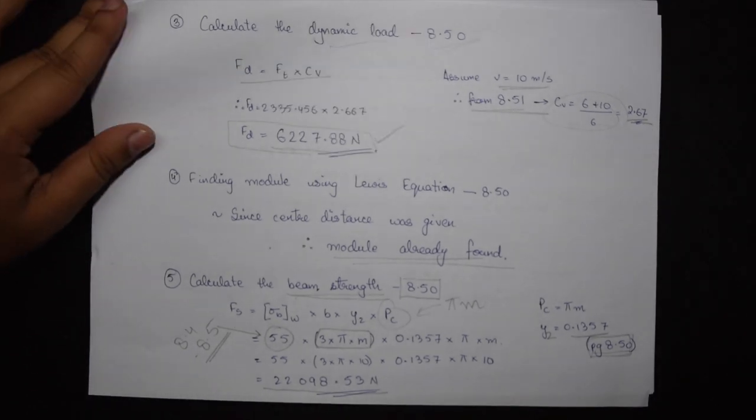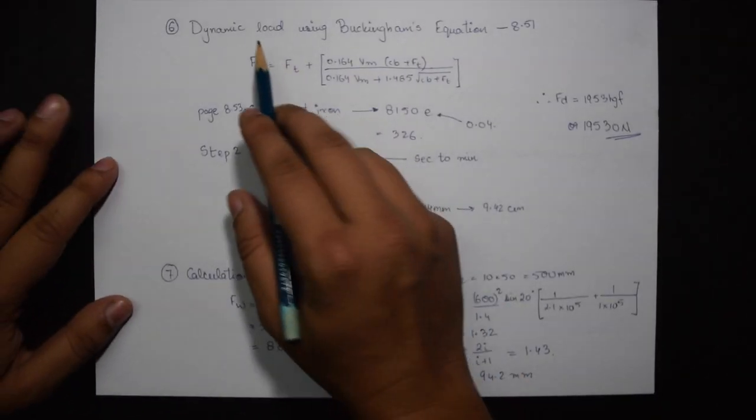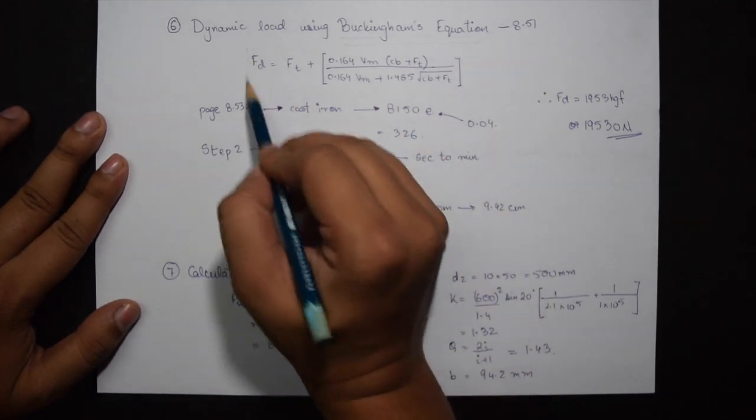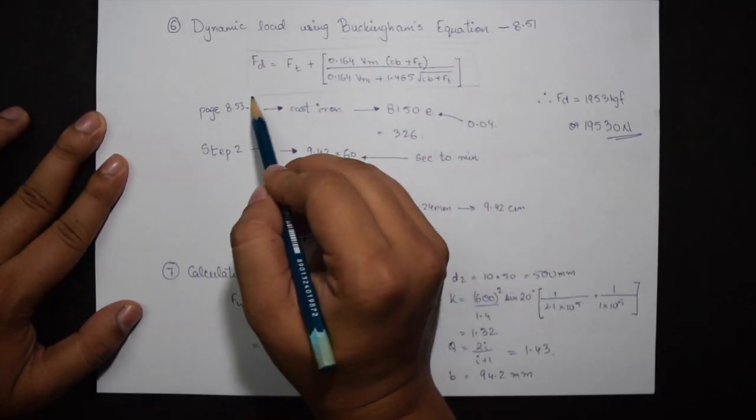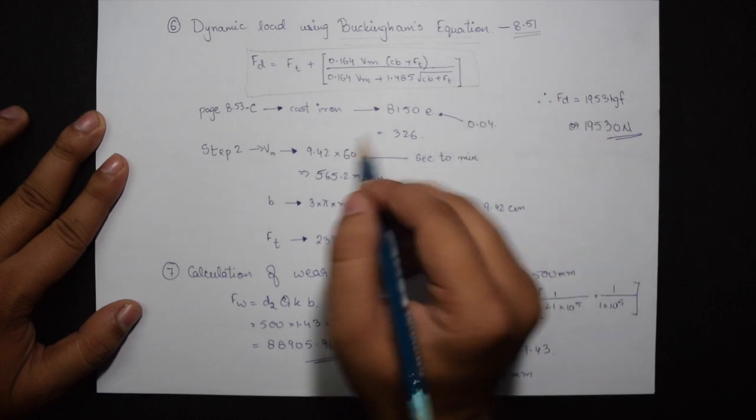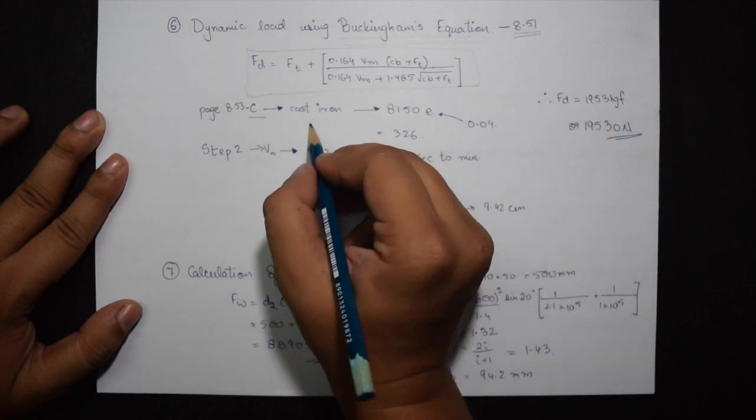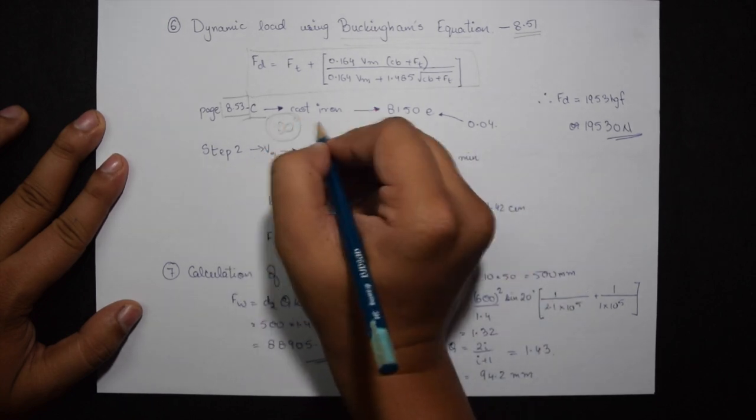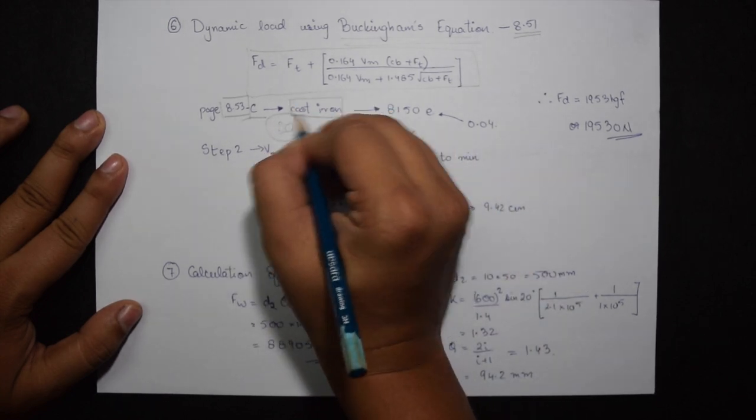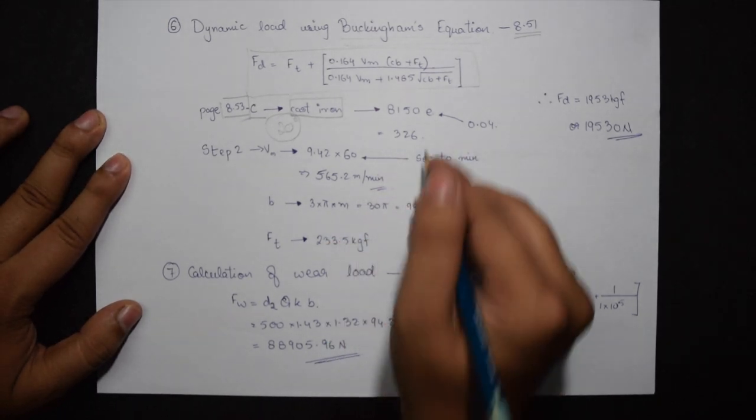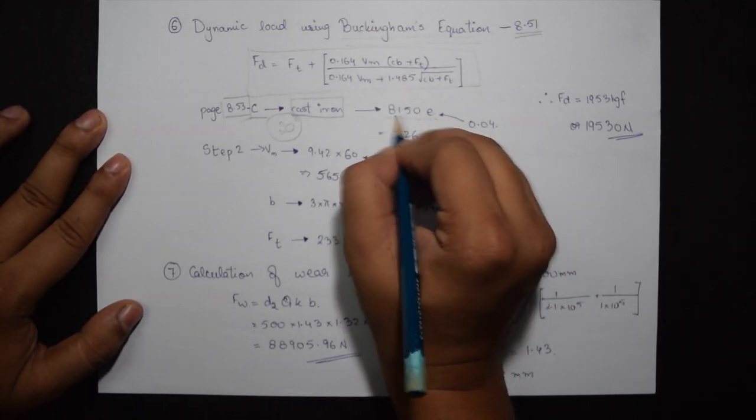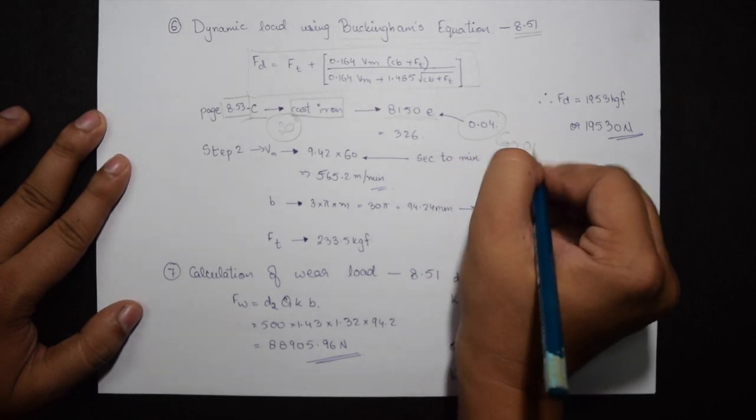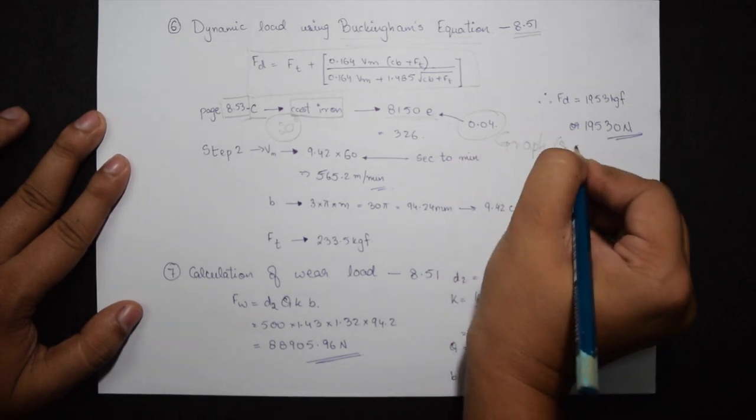The sixth step is calculation of dynamic load using Buckingham's equation. This formula is given on page 8.51. The value of C comes from page 8.53. Here 20 degree full depth and the wheel material is cast iron. Therefore the value of C would be 8.50 into E. E again is 0.04 explained in the previous video. So this turns out to be 326.